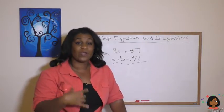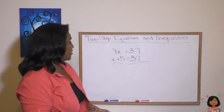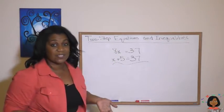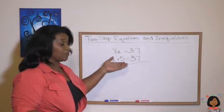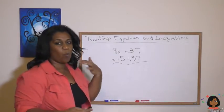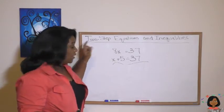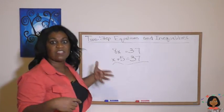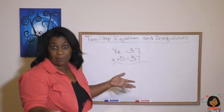Up until now we've been working on one-step equations, right? Things like 8x equals 37 or x plus 5 equals 37. There was only one step we had to take. Here we had to divide by 8. Here we had to subtract 5, and then we could find how much our variable was worth.